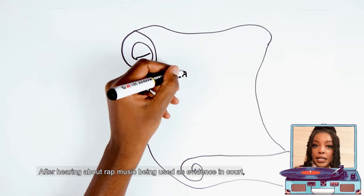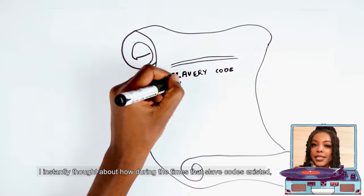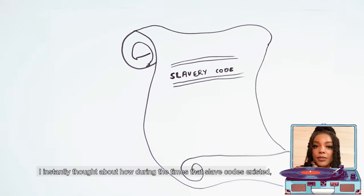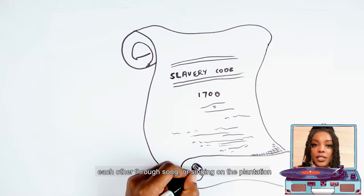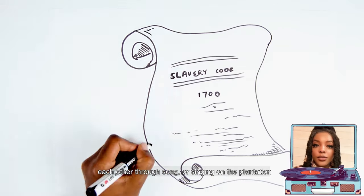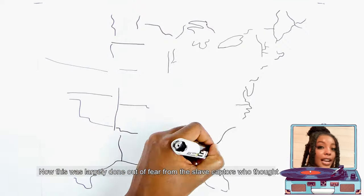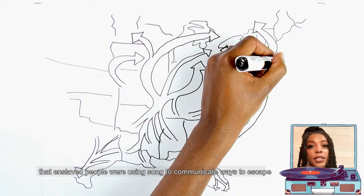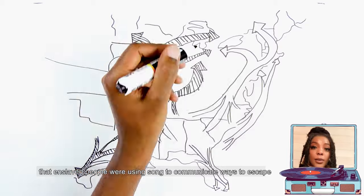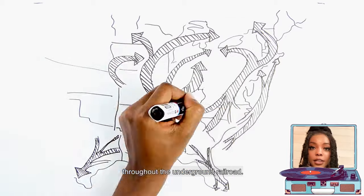After hearing about rap music being used as evidence in court, I instantly thought about how during the time that slave codes existed, enslaved people were beaten and whipped for communicating with each other through song and for singing on the plantation. Now, this was largely done out of fear from the slave captors who thought that enslaved people were using song to communicate ways to escape throughout the Underground Railroad.